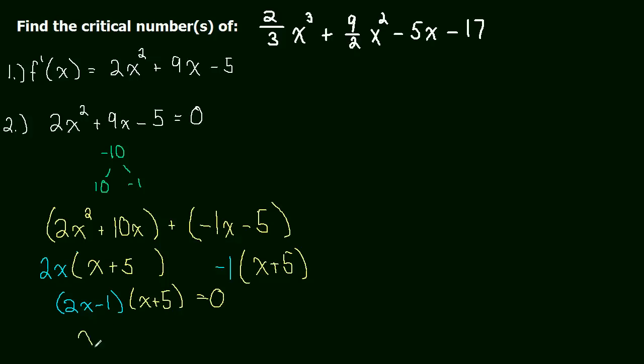And of course, the critical numbers are now going to be x is 1 half. So we just solved the first binomial, and then x is negative 5. So those are our two critical numbers. Our job is done. We've found our critical numbers.